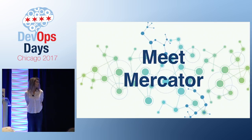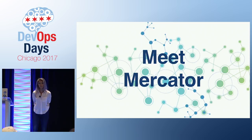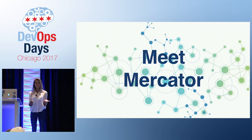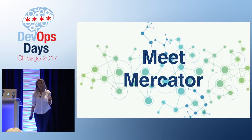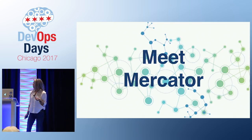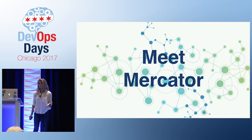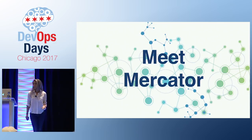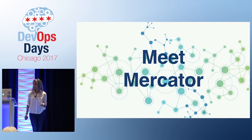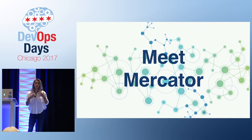Enter Mercator. At LendingClub, we've written an internal Java application called Mercator, and its job is to communicate with all of our infrastructure and build a graph model of our infrastructure. Mercator is periodically scanning all of our infrastructure components and third-party tools, making sense of the responses and building a graph map of all of those interconnected infrastructure components. This then provides us with metadata around which we build monitoring, alerting, and automation.